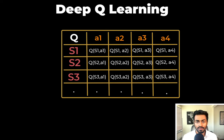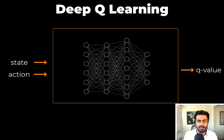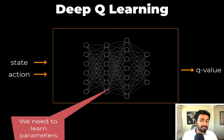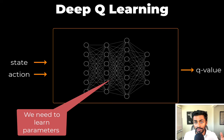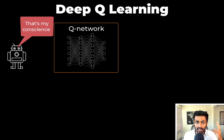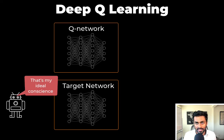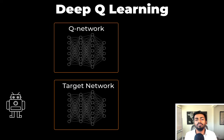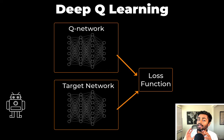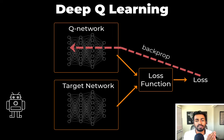So we replaced this giant Q-table with a function. In the context of AI, this function is typically a neural network. Q-learning is used to learn values in a Q-table, while deep Q-learning is used to learn the parameters of a Q-network, or neural network. This Q-network is randomly initialized and represents Frank's conscience. We also have a target network that represents the ideal conscience and has the same architecture as the Q-network. The goal is to compare Frank's current conscience with the ideal conscience, compute a loss, and use backpropagation to update the Q-network parameters. Then the cycle repeats.